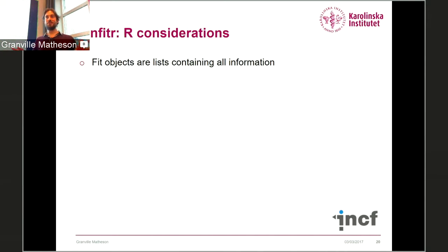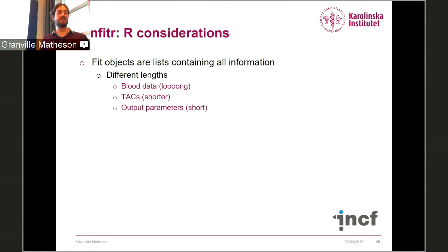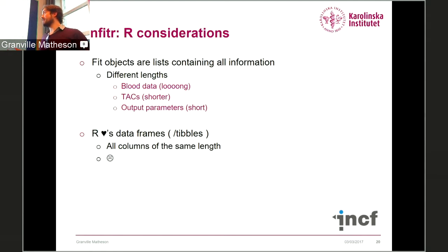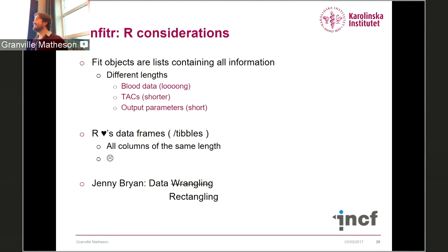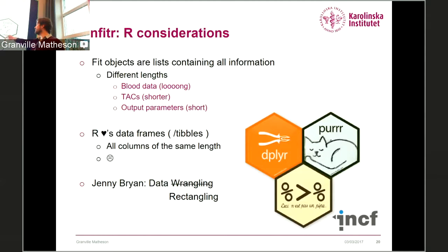For those who don't care about PET or KinFitter but are interested in R: considerations for doing this in R are that fit objects are lists containing all information of different lengths — there's blood data which is really long, there's TACs which are much shorter, and output parameters which are extremely short. R works really nicely with data frames and tibbles, which requires all columns to be the same length, making this difficult to implement. However, as Jenny Bryan discussed in her talk at PlotCon on YouTube, a lot of this data wrangling is in fact data rectangling. Nested data frames allow you to rectangle data for use with dplyr, tidyr, and purrr.